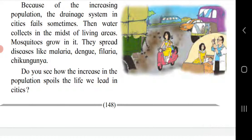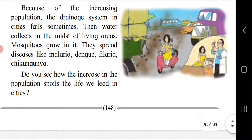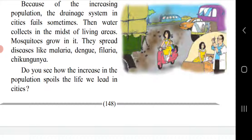Because of the increase in population, the drainage system in cities sometimes fails and water collects in living areas. Mosquitoes breed in it and spread diseases like malaria, dengue, filaria and chikungunya. Do you see how the increase in population spoils the life we lead in cities?